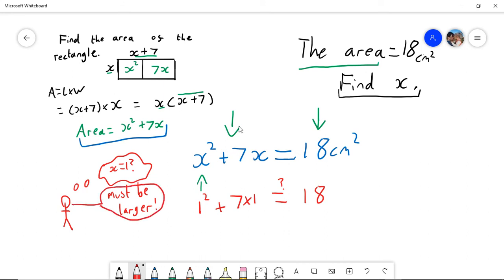So x must be larger than that. Let's try another step - let's try x equals 2. And again, we're just thinking, could x be 2? 2 squared plus 7 times 2. Let's just work this out. 2 squared is 4, 7 times 2 is 14. Sorry, why have I put 8 there? I don't know what I've done there. I've just been a bit silly. 4 plus 7 times 2 is 14. 4 plus 14 is 18, which is what we want it to be.